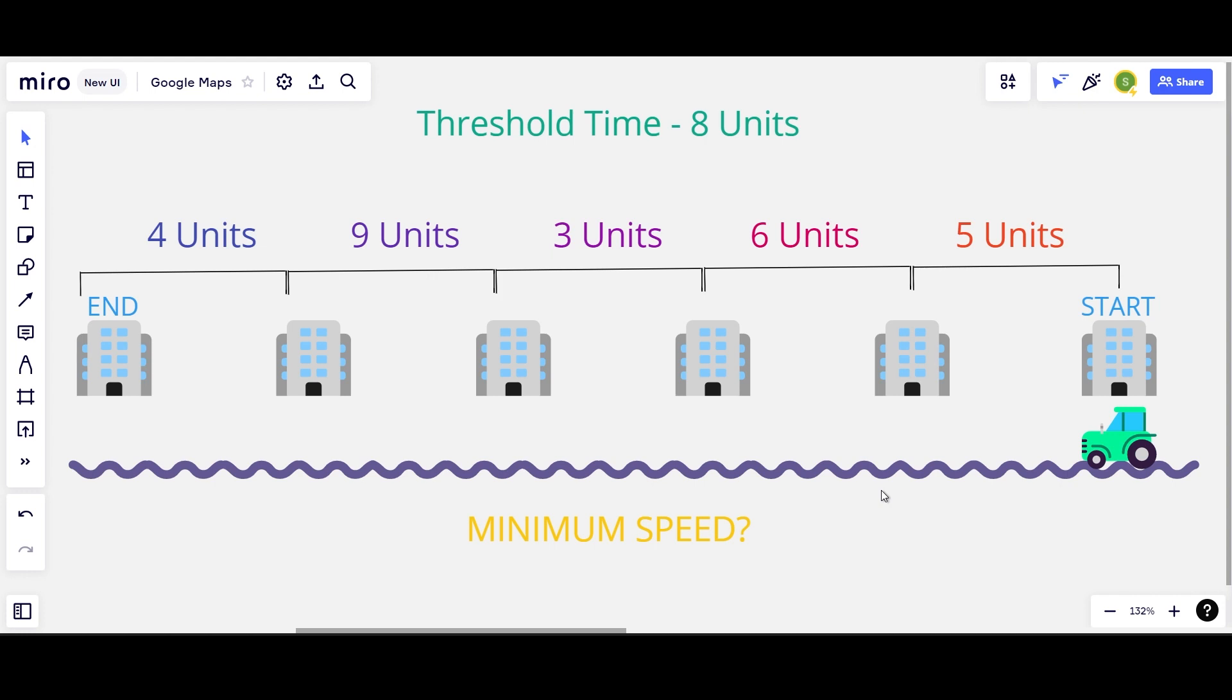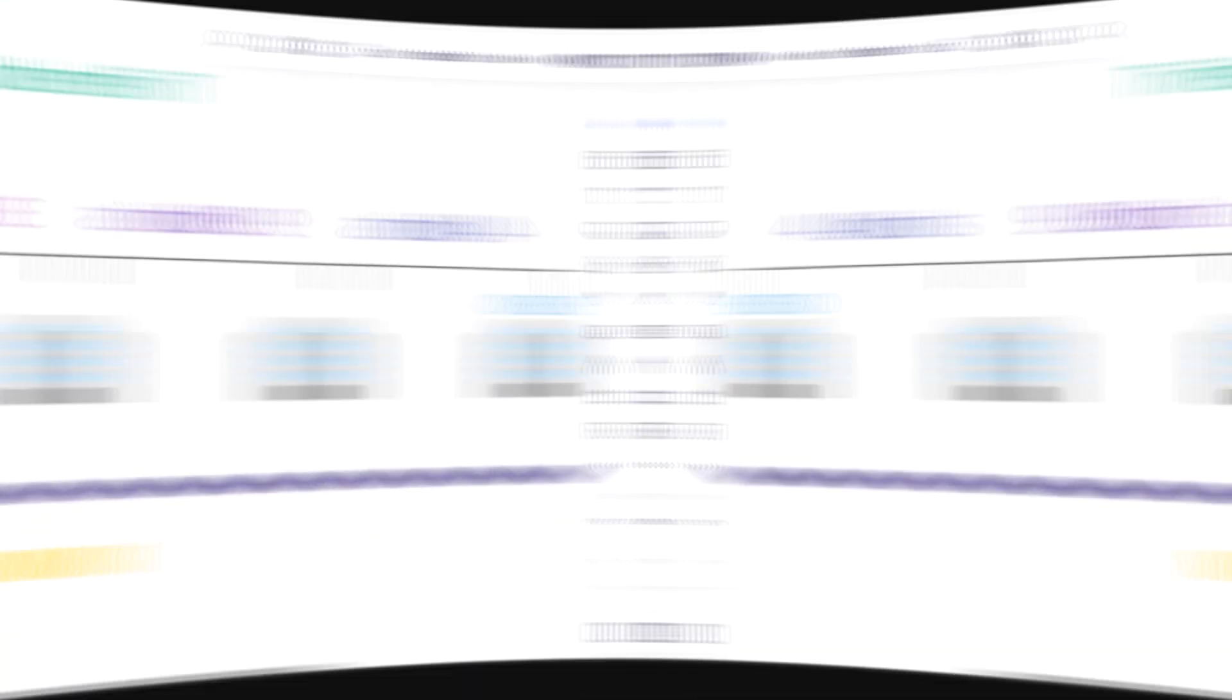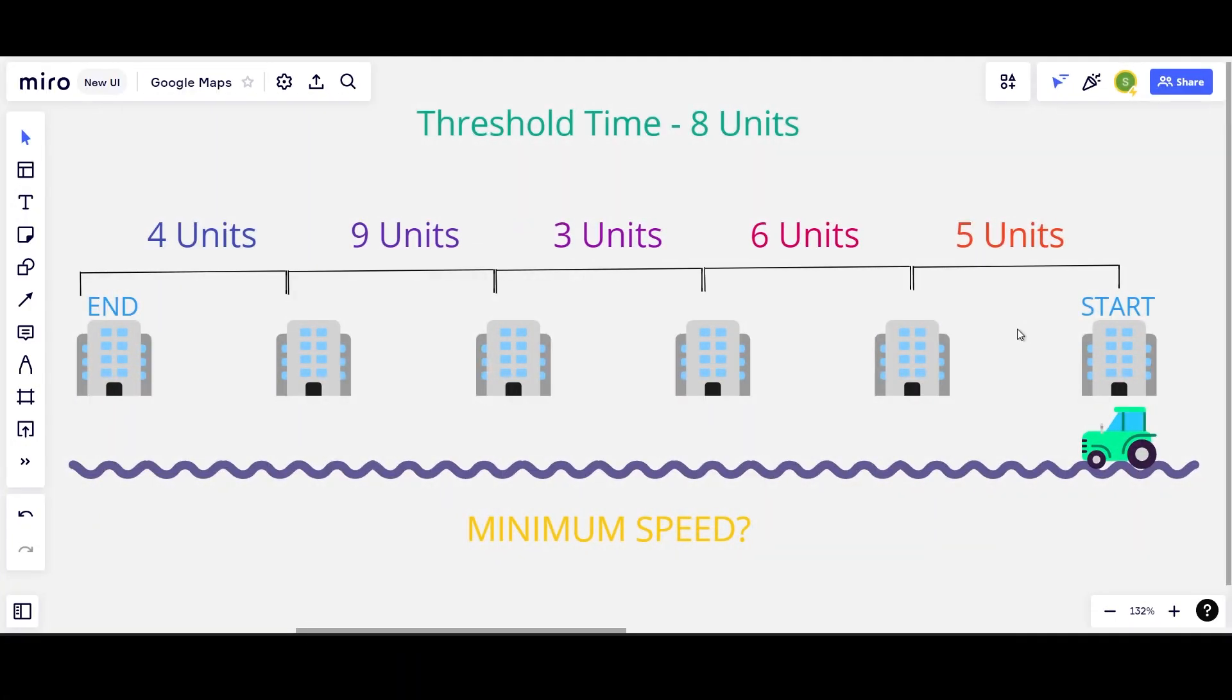A quick note, time will never be in fractions or decimals. For example, if my distances are 5 units, 6 units, 3 units, 9 units and 4 units and the threshold time is 8 units.